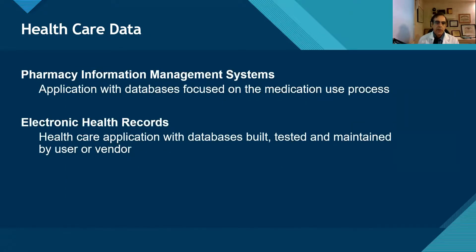So we have our pharmacy information management systems, and those are focused really on the medication use process. And then we have our electronic health records, where we pull in all of the information about the patient — not just about their medication use, but their diagnoses, their lab results, and other information.